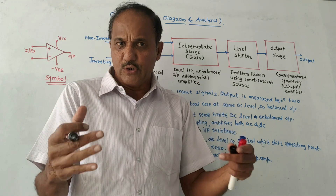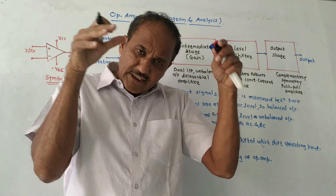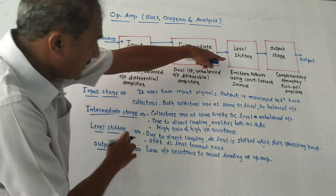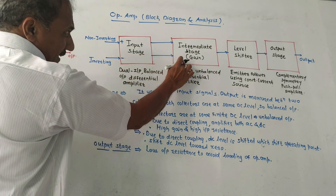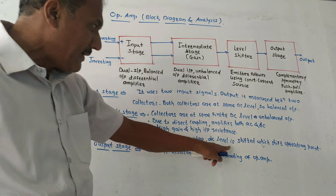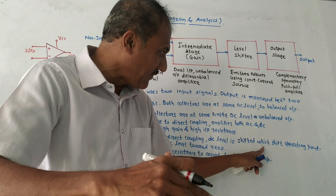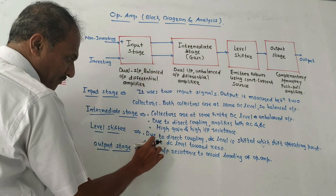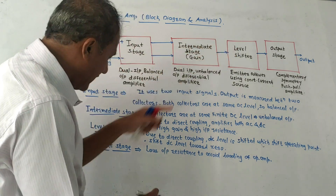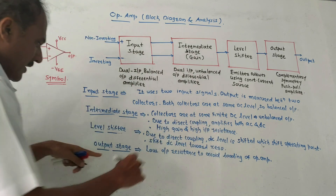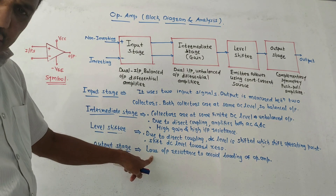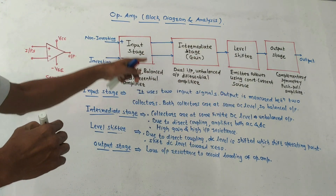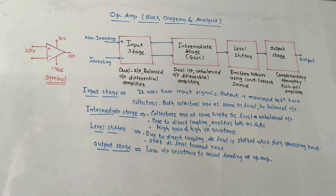Practically, input resistance is very very large because a very small amount of bias current flows at the input terminals. The third stage is the level shifter. Due to direct coupling between the first two stages, the DC level is shifted away from ground level, which shifts the operating point and produces distortions in the next stages. To avoid this, the level shifter stage shifts the DC level towards zero. The output stage is responsible for producing low output resistance to avoid loading of the op-amp.